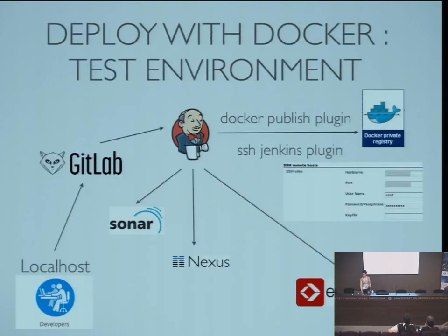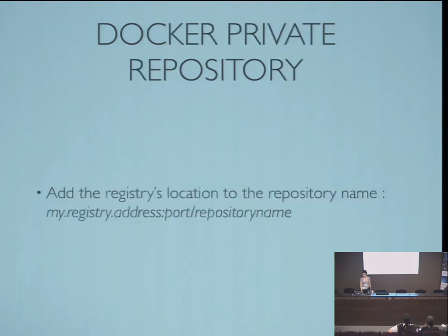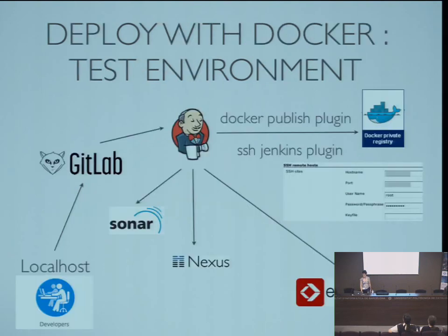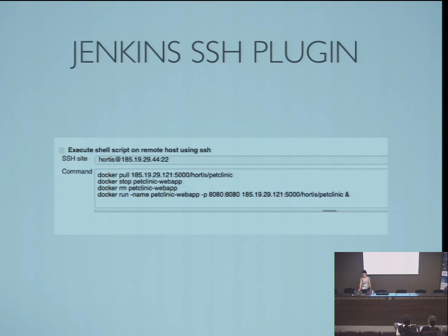We are going to use a Docker private registry. It's really easy — we just prefix the tag name of our image with the IP and port of our private Docker repository. Finally, we use the SSH Jenkins plugin to connect to the remote node and execute commands: pull the image from the Docker private registry, stop the container if it's running, and launch the new one mapping the port to 8080.